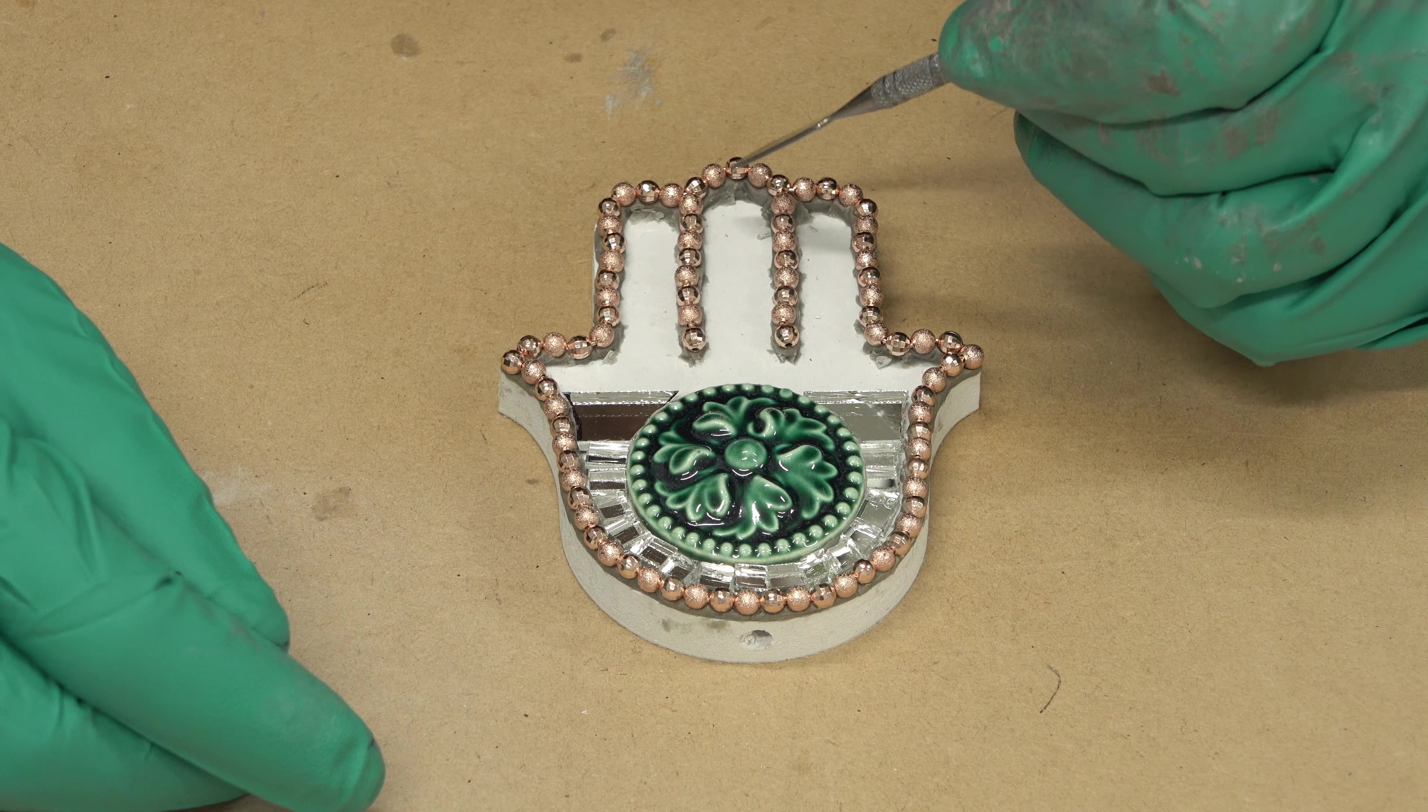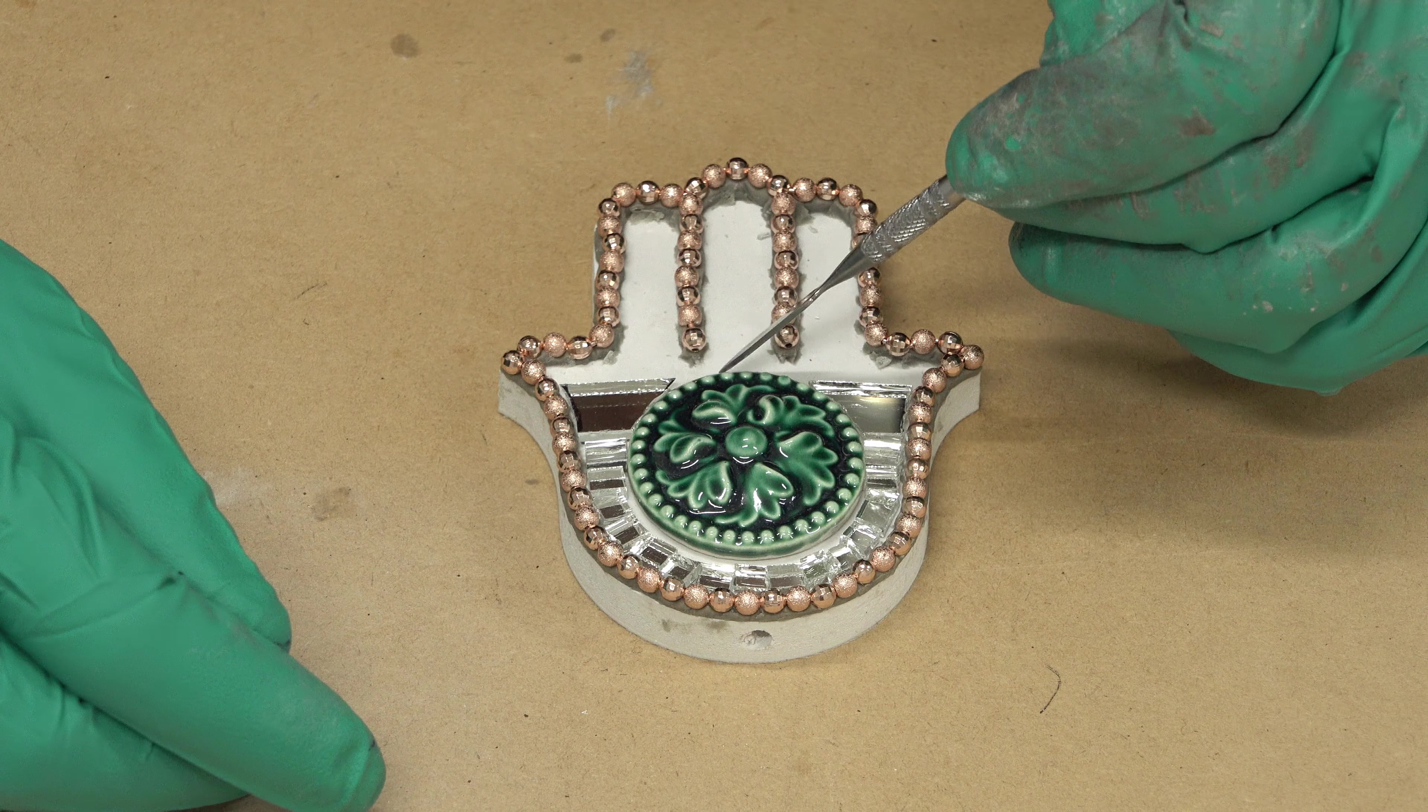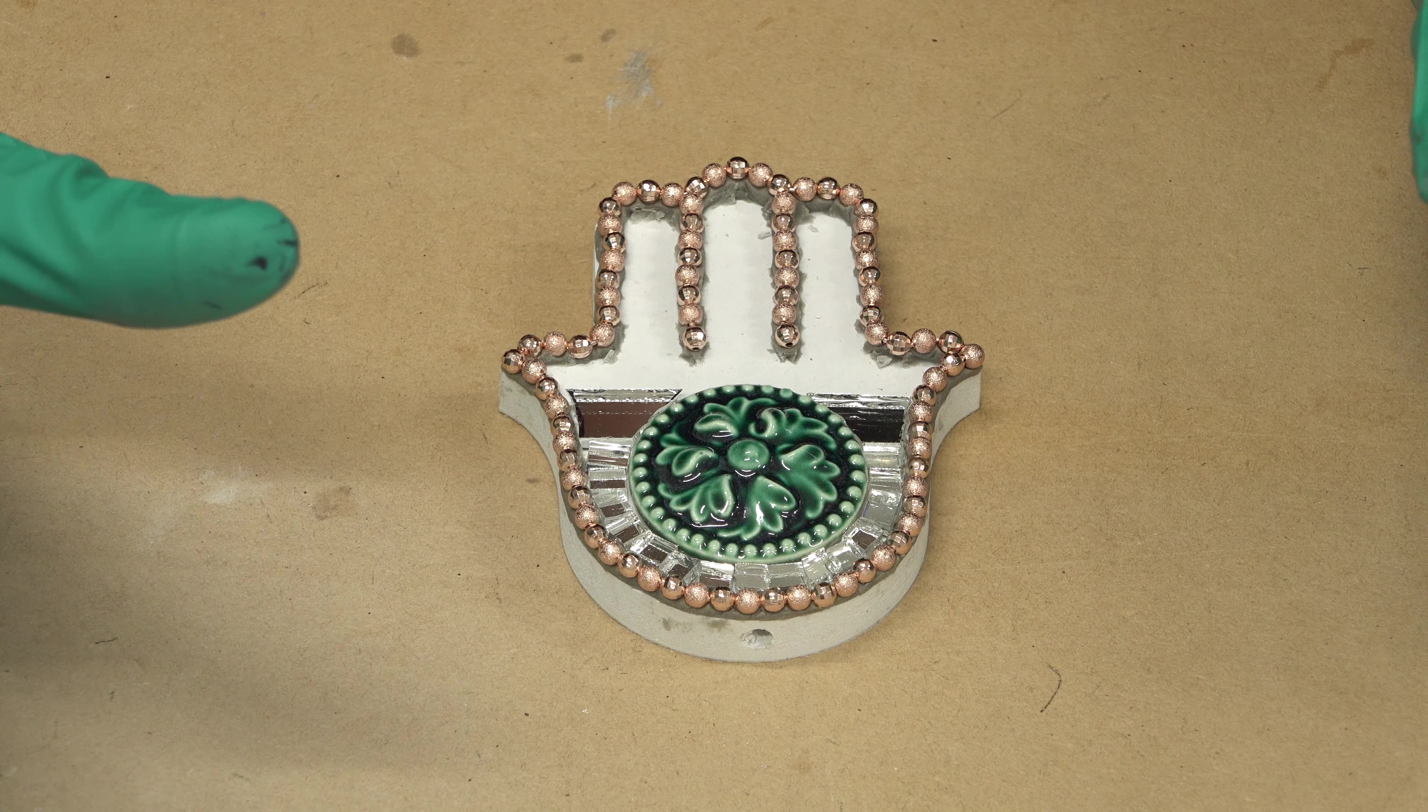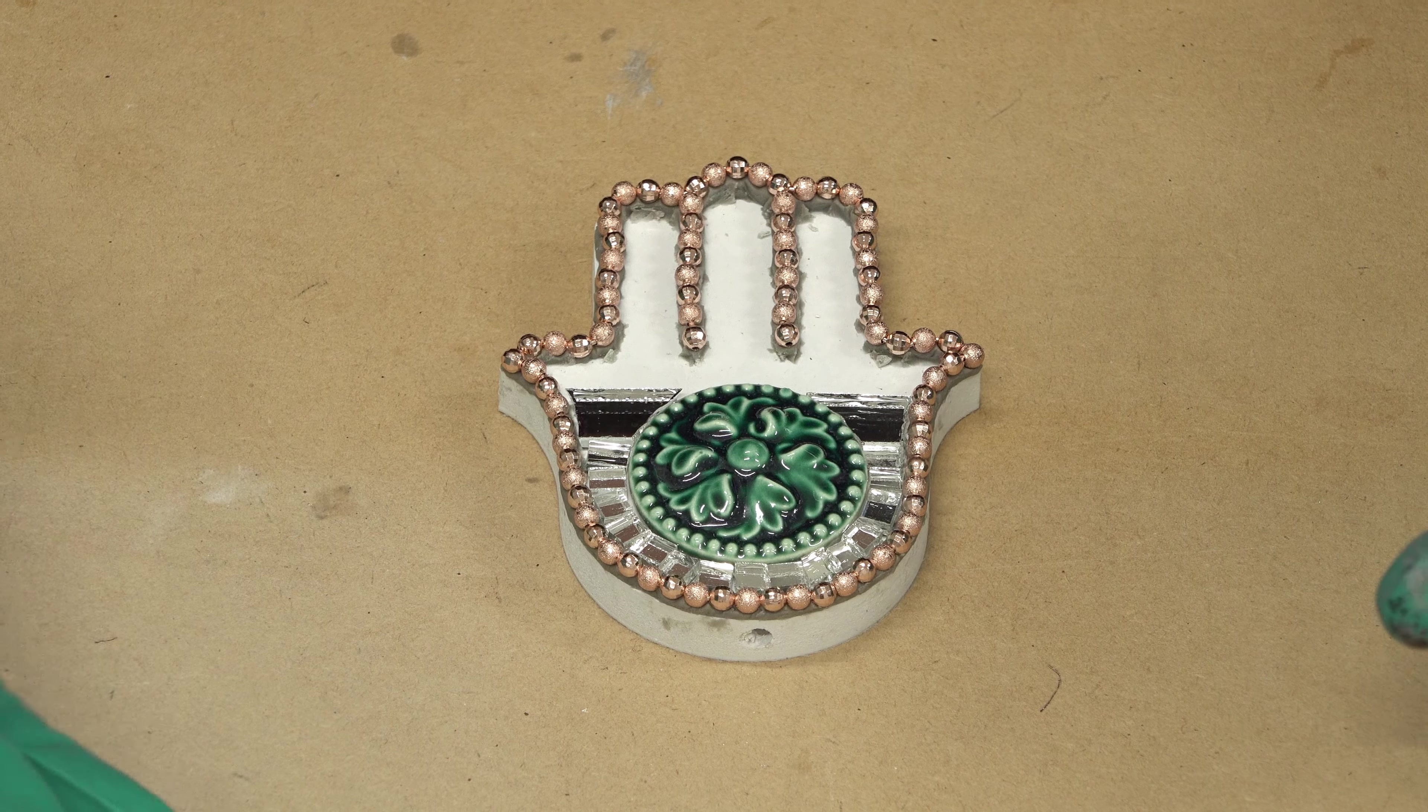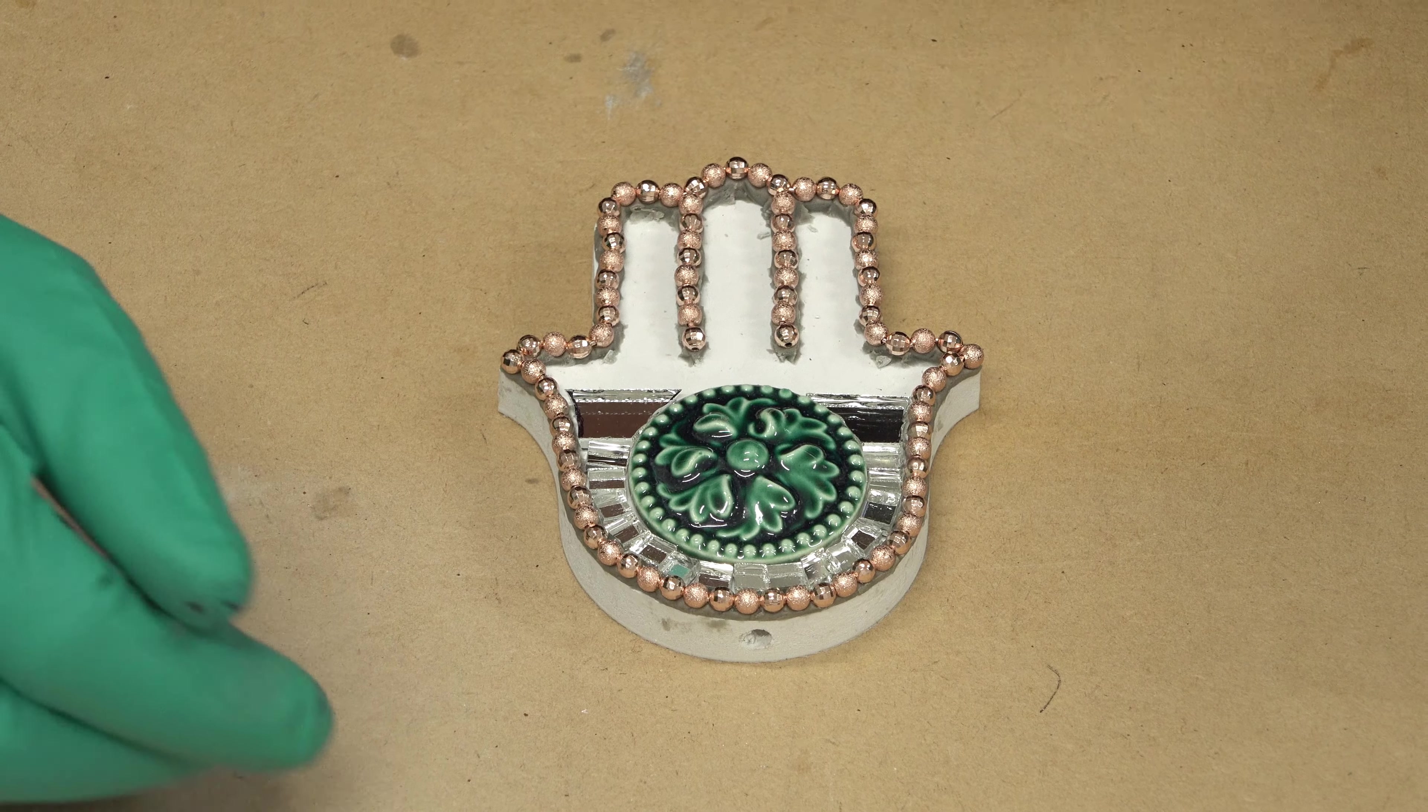I've already adhered this down except for the mirror and this emblem here. As you can see nothing's adhered only the ball chain. So what I'm going to do is actually mix up a batch of epoxy sculpt. That's what I've been using. You can use glue if you want, whatever you'd like to use, but I'm just using epoxy sculpt for such a small project.